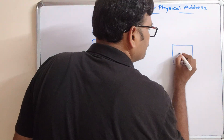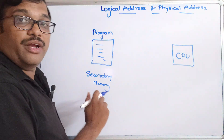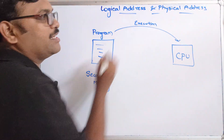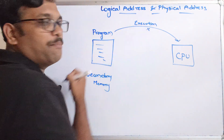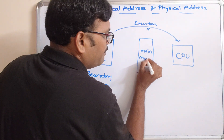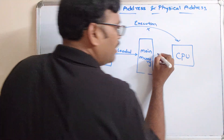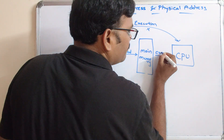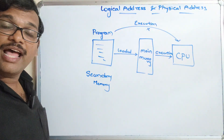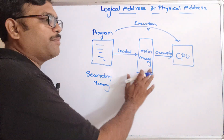This is the CPU — the central processing unit — which will be executing the program. If this program needs to be executed, direct access from secondary memory will not happen. First, the program will be loaded into main memory, and from there the execution will be done by the CPU. So direct execution — meaning direct access of the program from secondary memory — will not happen. Only the CPU will access data from the main memory.